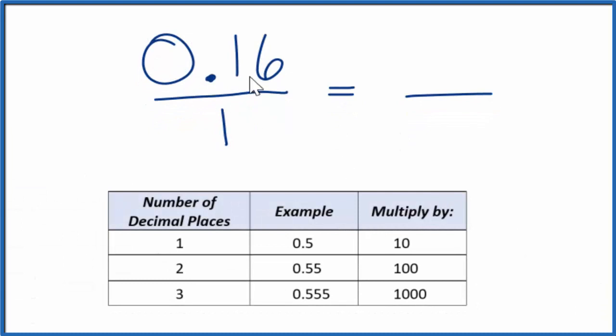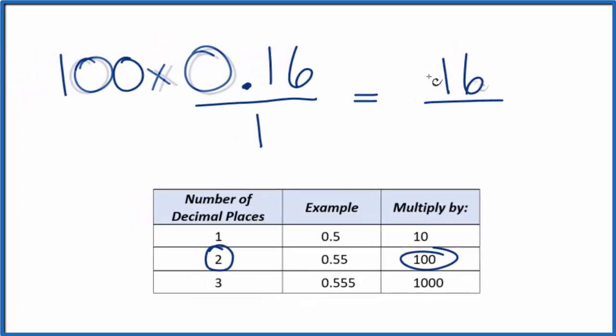If we have two decimal places here after the zero, what we can do if we have two decimal places like 0.55 or 0.16, we can multiply it by 100. So 100 times 0.16, that gives us 16. That's a whole number.